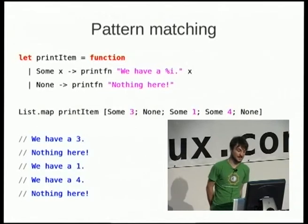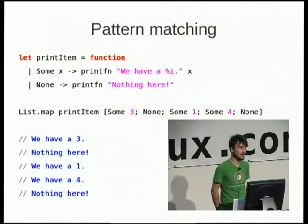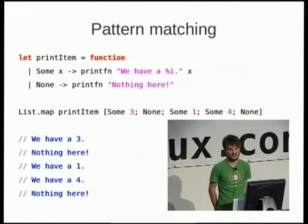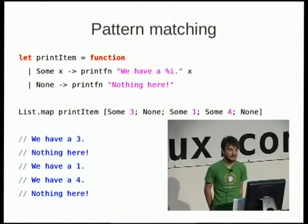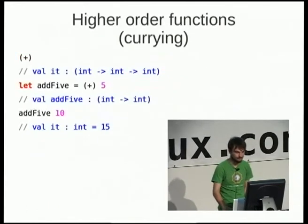Pattern matching is a big thing in functional programming. We make a function called printItem that takes either a Some or a None — that's a type of Option. You can give it Some 3, or None, or Some 1, Some 4, and so on. In this example it prints out what you give it: three, nothing here, one, four, and so on.